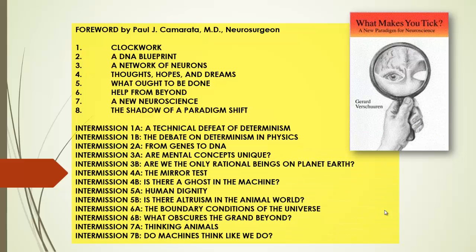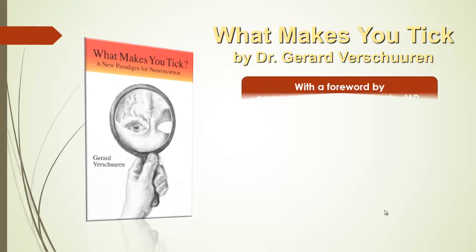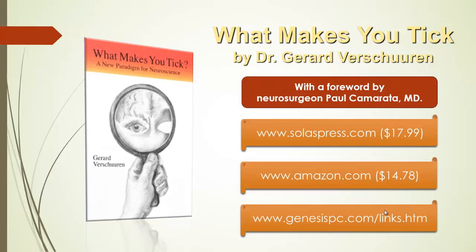It has a foreword by neurosurgeon Paul Camerata. It has what I call intermissions that go into more detailed issues, if you are interested in those. And all of this can be found on the solaspress.com website, amazon.com, genesisbc.com slash links.htm. On amazon.com, just type my name, Gerard Verschuren, and you will find this book and many others I wrote on these kinds of issues. Thank you.